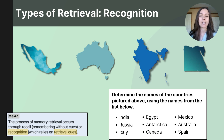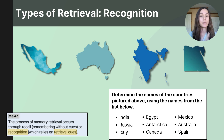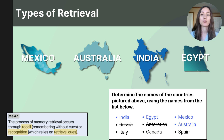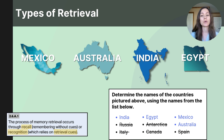A retrieval cue is anything that helps you access information that is stored in your memory — it could be a word, a smell, a sound, or even a feeling that can trigger that memory. In this example, the word bank may aid your memory retrieval and act as a cue to identify the country names. To review: recall is when you retrieve a memory without prompting or cues, while recognition occurs when a retrieval cue helps you identify previously learned information.